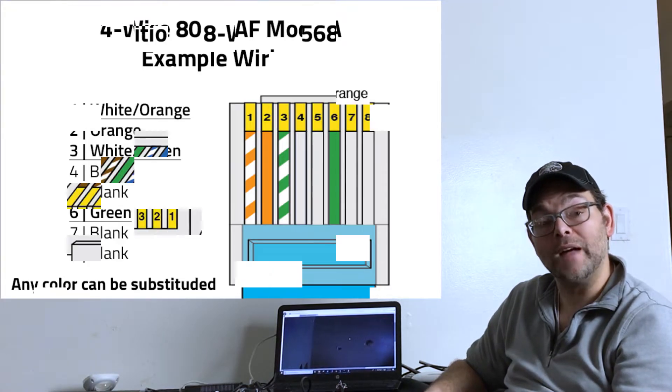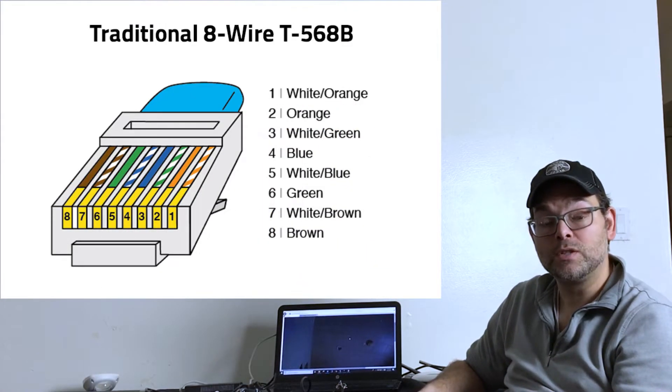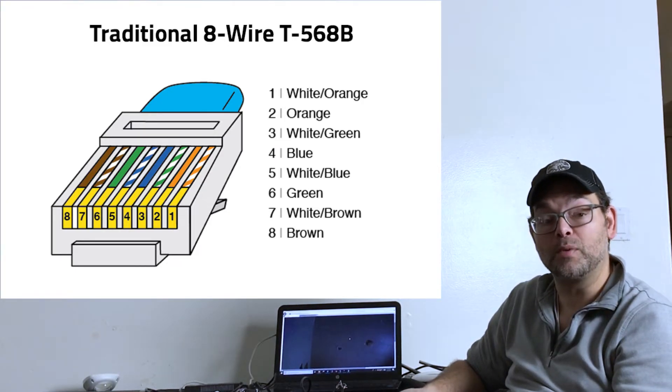Traditional network cables have four pairs of wires, so that's eight wires in total. There's a green pair, an orange pair, a blue pair, and a brown pair.